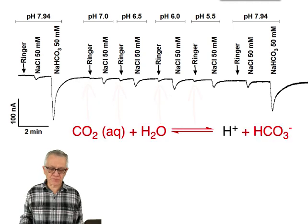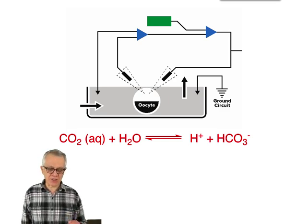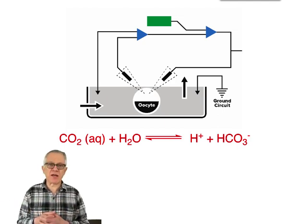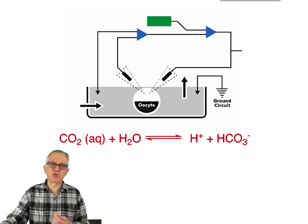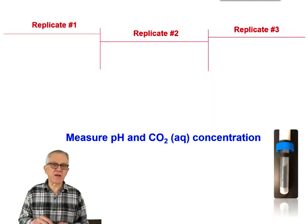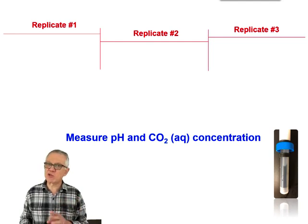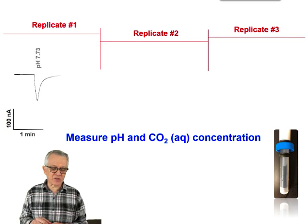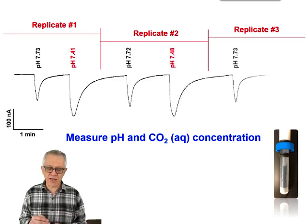So we excluded protons from the picture and addressed the question of CO2 versus bicarbonate. Using the Le Chatelier principle, we prepared aliquots of the same solution. One part was applied to the oocyte at the original pH, and another part was applied after lowering the pH. We have at least three replicates: first the sample without lowering the pH, then the same sample with the pH lowered. We know the pH itself is not going to cause a response. Here is what we get: a response at normal pH, and a much stronger response after lowering the pH.